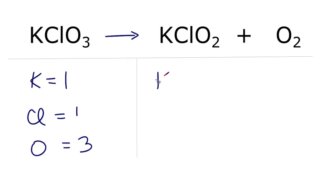On the product side, K, we have one, Cl, we have one, and oxygen, we have two, but be careful, we have these two right here and these two here, so two plus two equals four. So we have four oxygens on the product side.